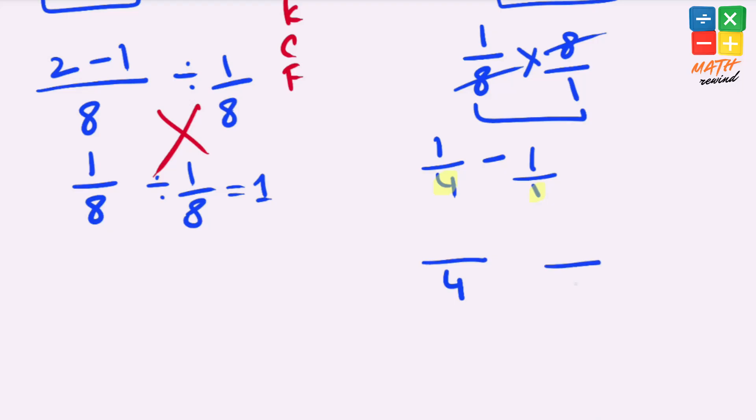So we write 4 in both the denominators. We have a negative sign present here. Now whatever we have done to the denominator we must do the same to the numerator. On this side we haven't made any changes to the denominator. 4 was there already, we have kept 4 as it is, so the numerator remains the same.